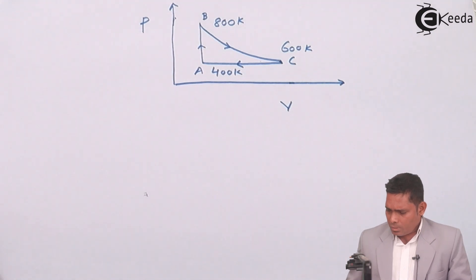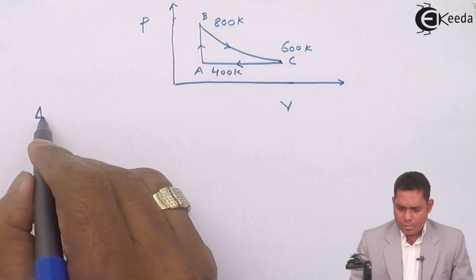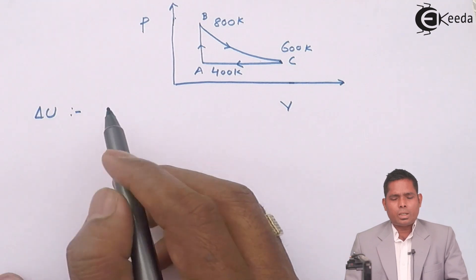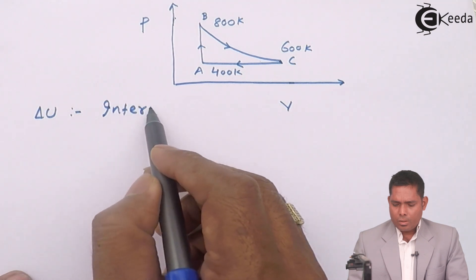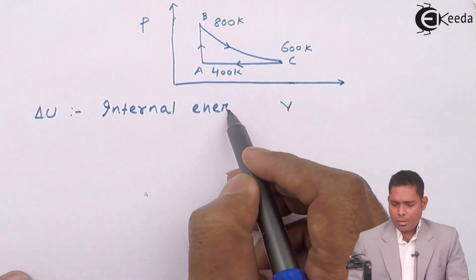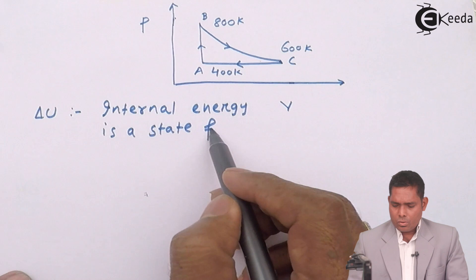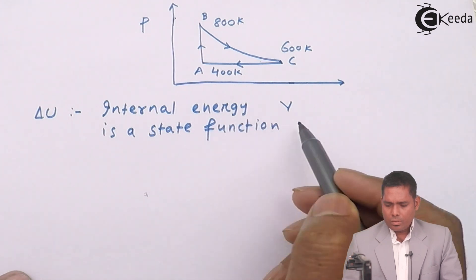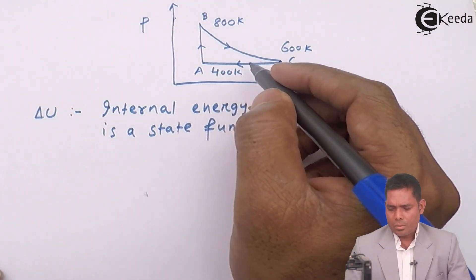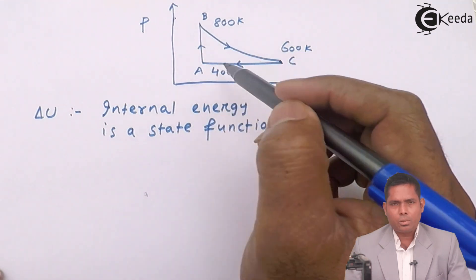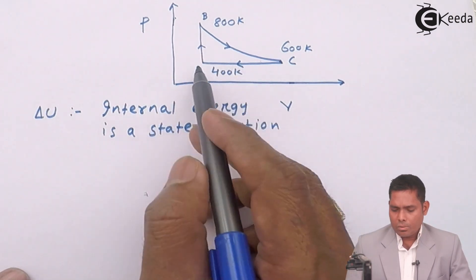The change in internal energy — we must know that internal energy is a state function, and it does not depend on the path followed. It only depends on the temperature difference. Therefore, let us find the internal energy change in each of the processes.